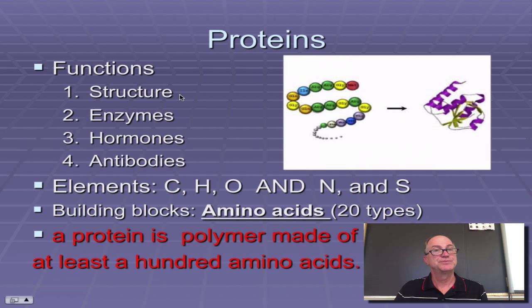Functions, then, include structure, like your skin and your bone. Enzymes speed up the reactions. Hormones send messages from one part of the cells to the other. And antibodies, which are fighting off infection. The elements you find in a protein: carbon, hydrogen, and oxygen, and also nitrogen and sulfur.